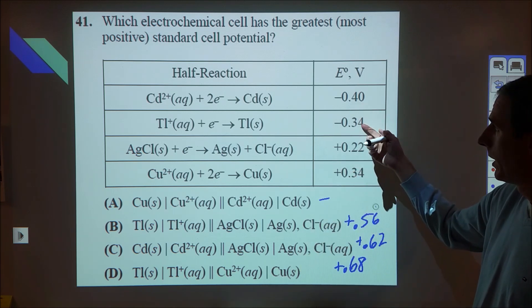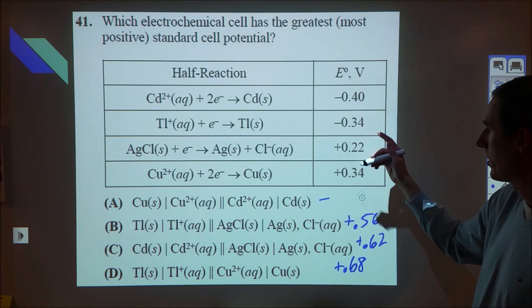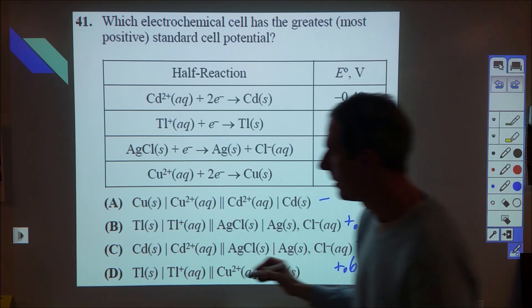So at that point you want to go through and make sure that that's correct. But if it is, we have plus 0.34, and then the thallium is being oxidized, so we have another plus 0.34, so that one's good, and then D is our choice.